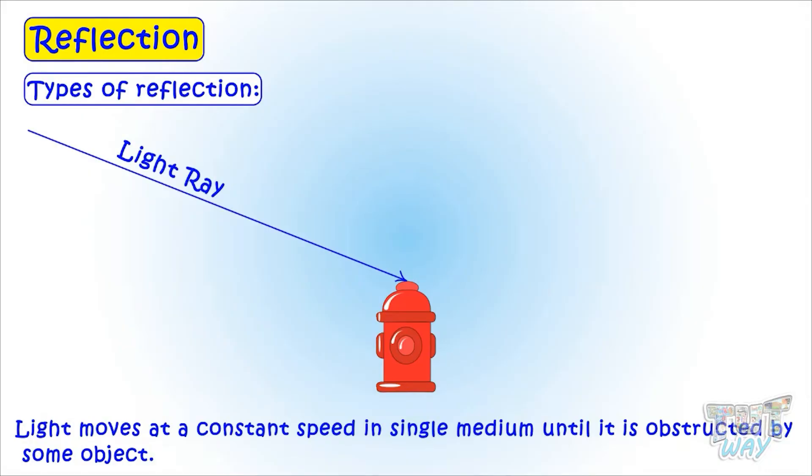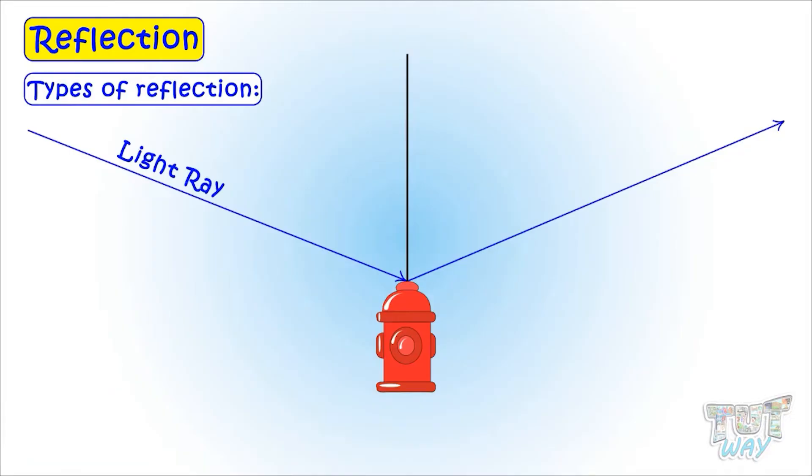When it is obstructed by some object, it reflects at the angle which is the same as the angle at which it hits the object. All reflected light obeys the relationship that the angle of incidence equals the angle of reflection.